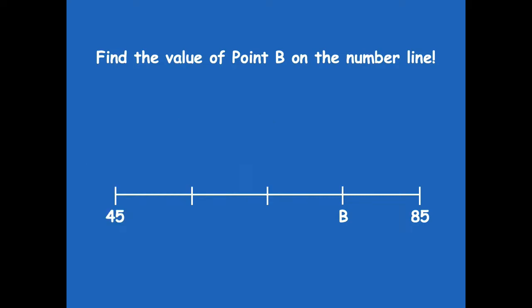The value of B is 75. We know this because we check whether they're counting by 5s or 10s. Starting at 45 and counting by 5s: 45, 50, 55, 60 — that doesn't reach 85 with the right number of steps, so it's not 5s. Trying 10s: 45, 55, 65, 75, 85 — yes! So we're counting by 10s. Counting by 10s back to B: 45, 55, 65, 75.